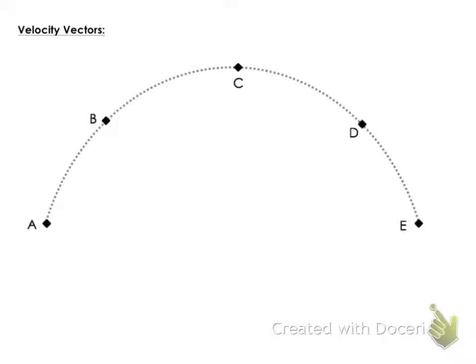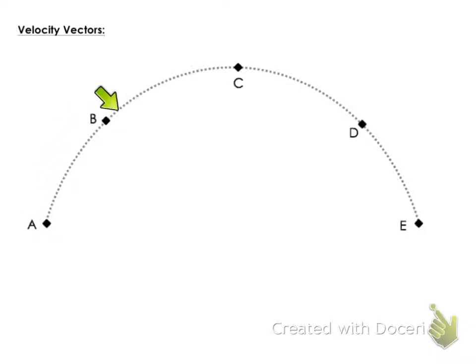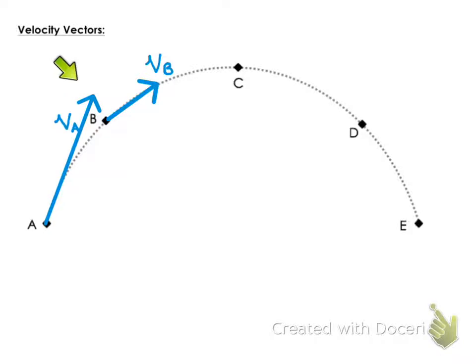Between points A, B, and C — the beginning portion of the path — when is it moving the fastest? Right when it's punted, it's moving the very fastest. Then it's going to slow down as it reaches the highest point. We know it's moving faster at point A than point B, therefore I should have a longer arrow at point A than at point B because velocity is greater at point A. Also notice what's happening to the way the arrow is pointing.